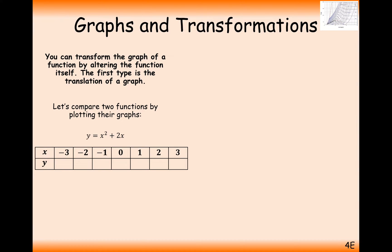There are two different types of movements with translating graphs. We're either going to move it up and down by a certain type of transformation, or we're going to be moving it left and right by a certain type of transformation. And if you want to do a combination of the two, then you just apply both types of transformation.